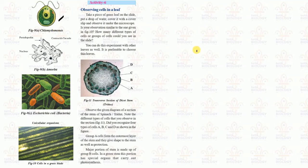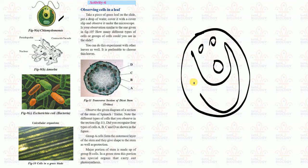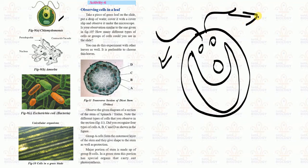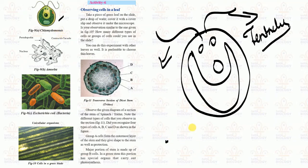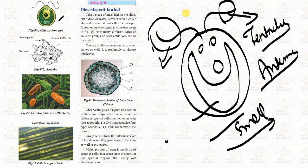Chlamydomonas is a unicellular organism with only a single cell. It has two hair-like structures called flagella, which help it move in water. Chlamydomonas usually lives in water and uses these structures to sense food and move from one place to another.